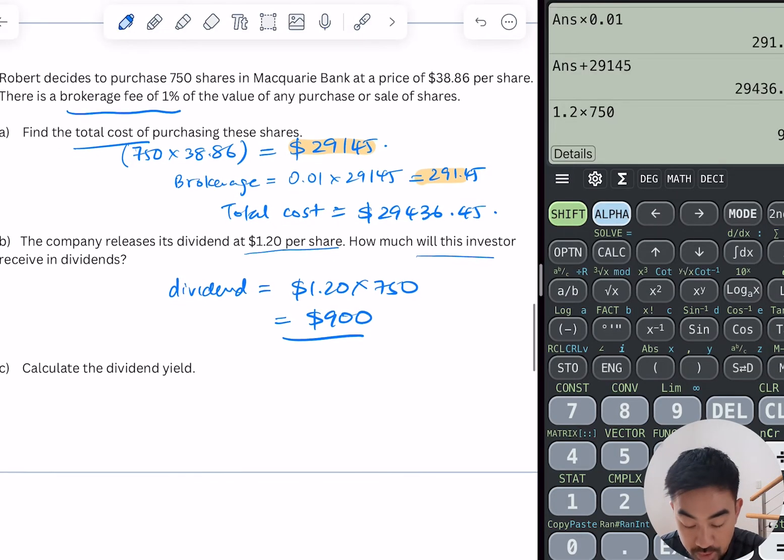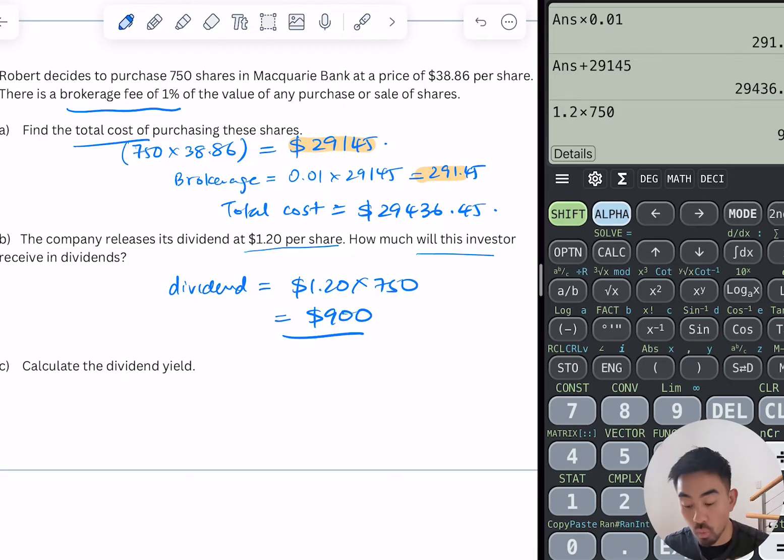Okay, cool. Last question here. So calculate the dividend yield. Now this question always confuses kids. All it is is dividend yield is one dividend divided by one share price, or one share, or the price of one share, times 100 to get a percentage. So let's work this out. Dividend yield equals, well what's the value of one dividend?